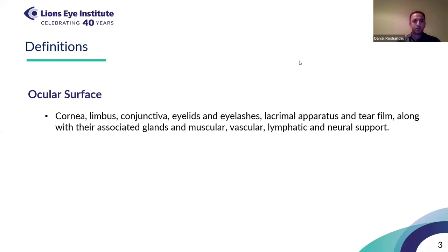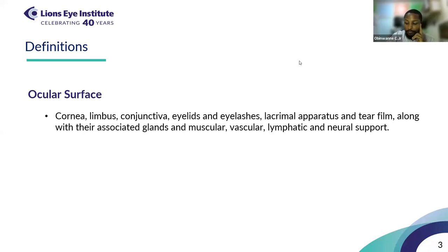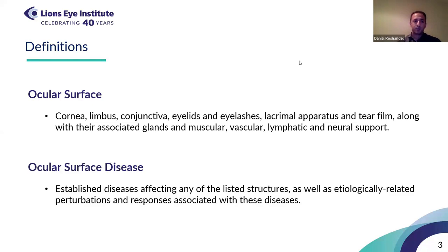The ocular surface is composed of the cornea, limbus, conjunctiva, eyelids and eyelashes, lacrimal apparatus and tear film, and also other glands and muscular, vascular, lymphatic, and neural support. When speaking of ocular surface diseases, we mean any established disease affecting any of these structures and also any responses to any of these diseases.